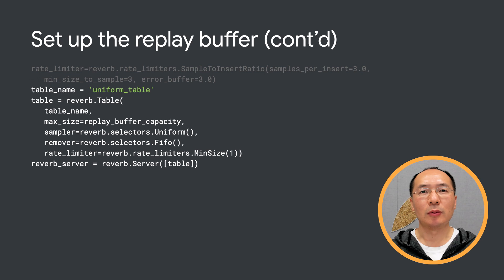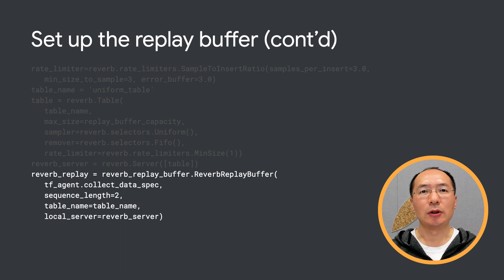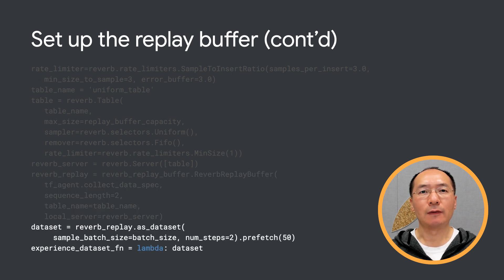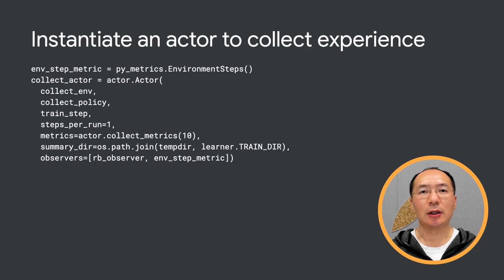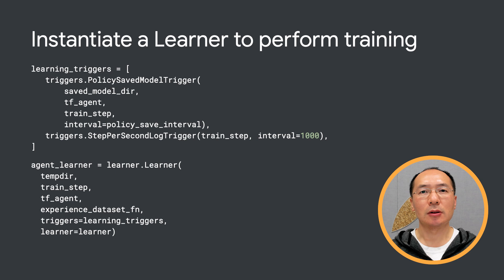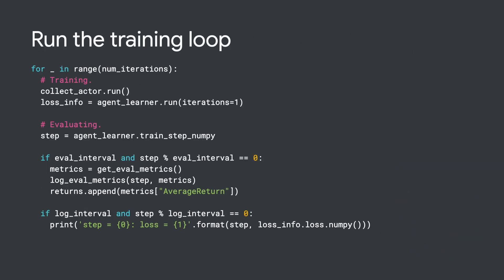We create the Reverb table and Reverb server as before, then we define the replay buffer. Next, we define a function that extracts the training dataset from the replay buffer. We will pass this function to the learner so that the learner can sample training data from the replay buffer. We then create a replay buffer observer. Now we can instantiate an actor with the collect environment and the collect policy to gather experience. We should also create an evaluation actor to evaluate the policy during training. The learner performs gradient step updates to the policy variables using experience data from the replay buffer. During training, the learner can push a new set of variable values to the variable container. Now we can run the training loop by first using the actors to collect the experience and then using the learner to train the model.